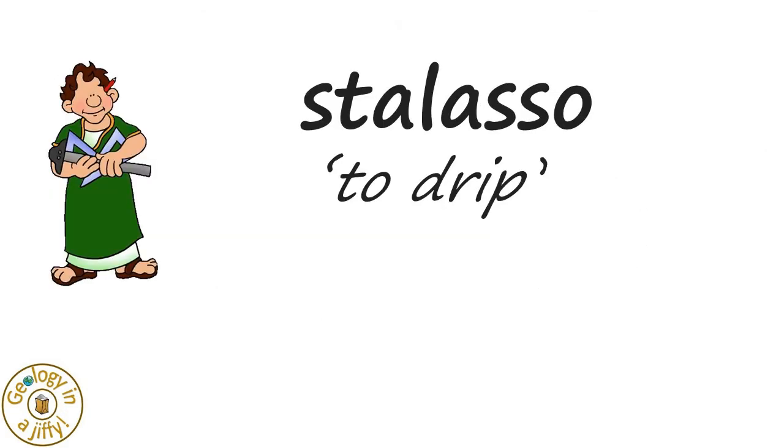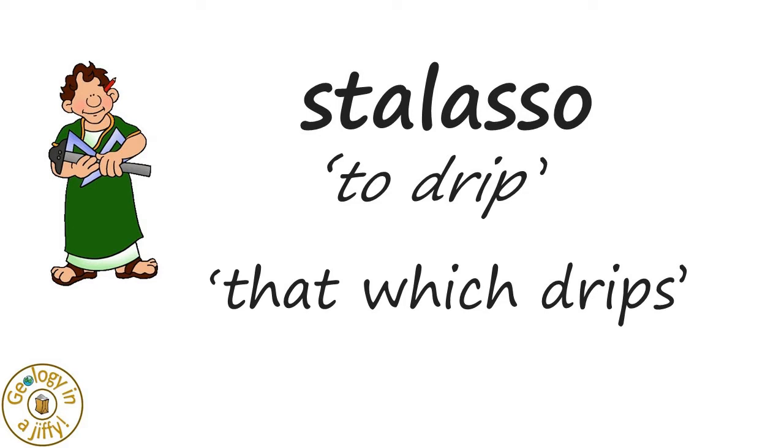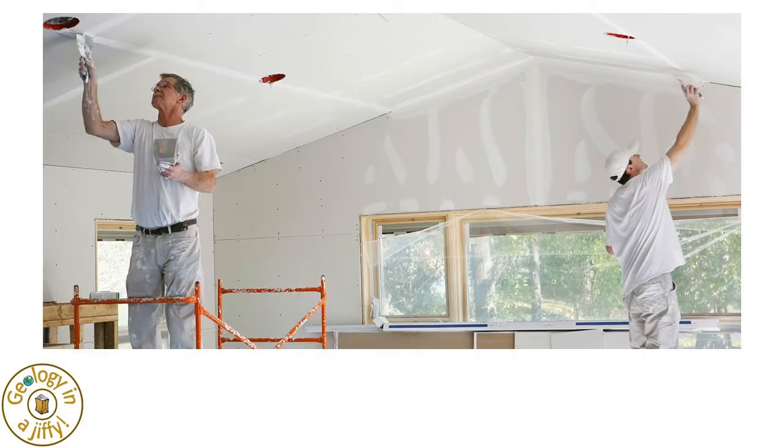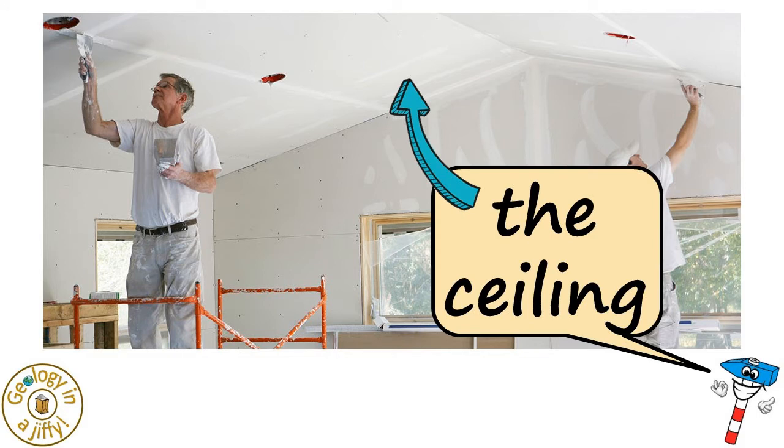The word stalactite comes from the ancient Greek staloso, to drip, and means that which drips. Stalactites form from the ceiling, or the roof areas of caves and other such places.